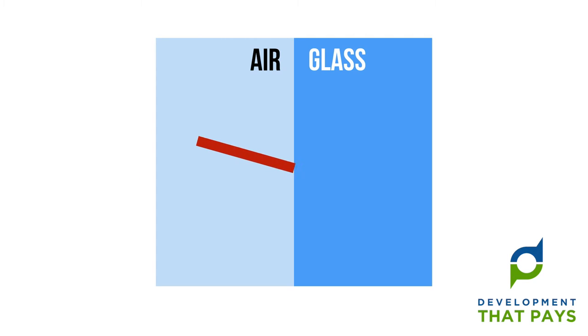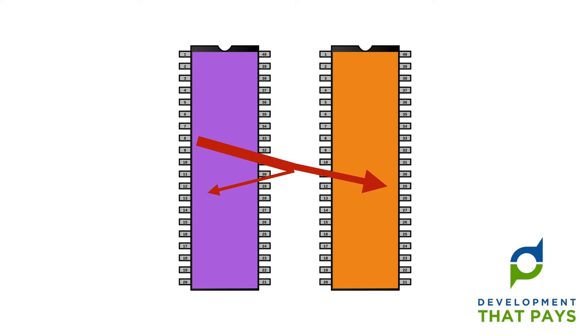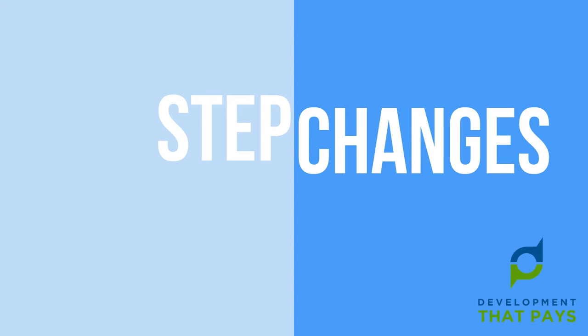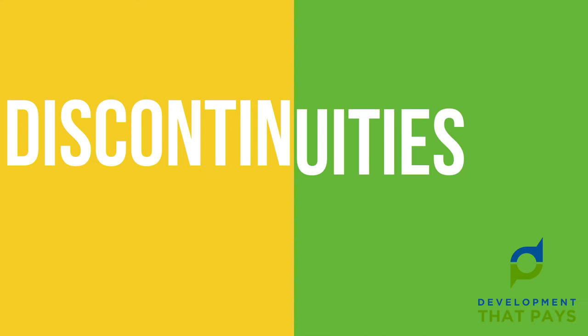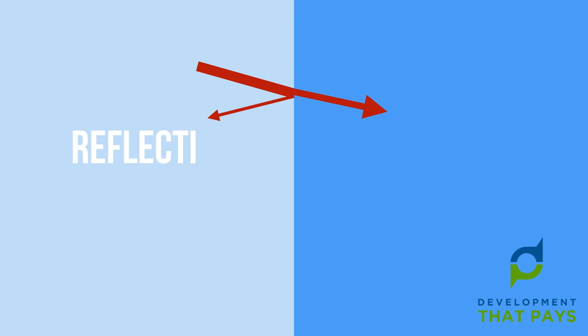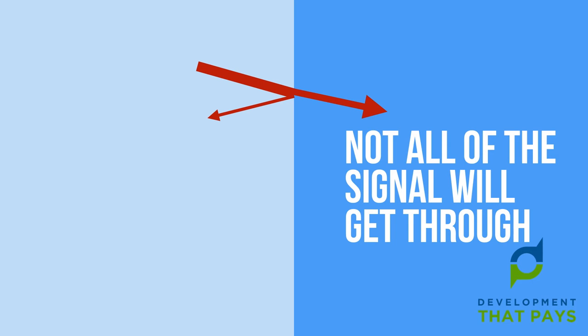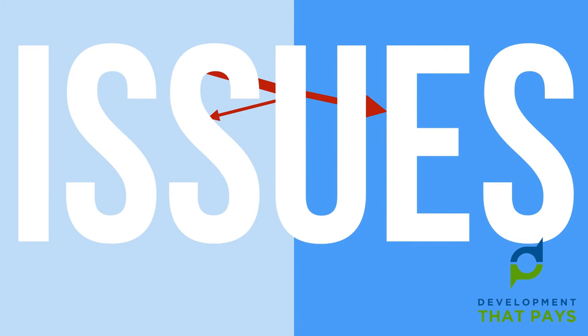All of this talk of light passing through glass and signals passing through electronic components was all about making two basic points. The first is that step changes, boundaries, discontinuities — call them what you will — are everywhere. They're everywhere in nature, so we shouldn't be surprised to find them alive and well in our teams. The second point is that wherever there is a step change, you can expect reflections. You can expect that not all of the signal will get through. You can expect issues.